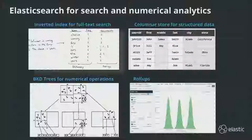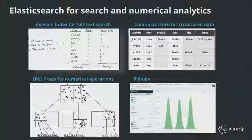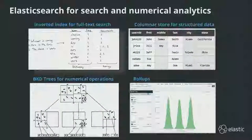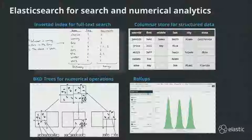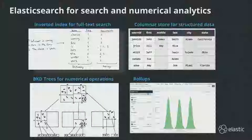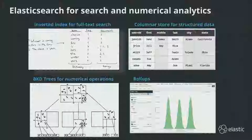Looking at Elasticsearch internals, there is an inverted index for full text search — if you want to search your log message, that functionality is there. For any structured data, there's also a columnar store called doc values in Lucene that's been improved over time to handle different data types including numerical data. For numerical data specifically, there's an underlying structure called BKD trees that's really efficient for numerical operations. You don't have to select BKD trees — Elasticsearch figures that out based on the data type and handles it behind the scenes. There are a lot of efficiencies in how we store numbers in Elasticsearch.